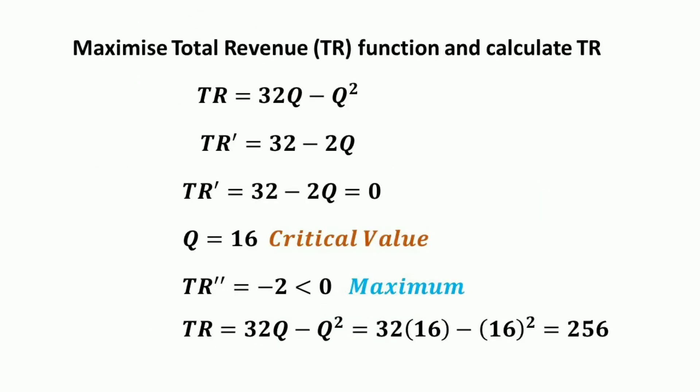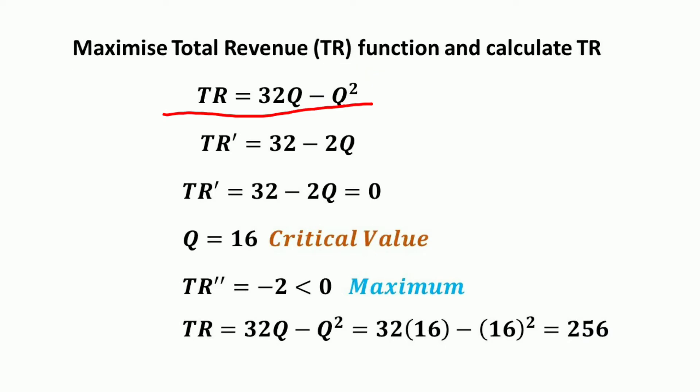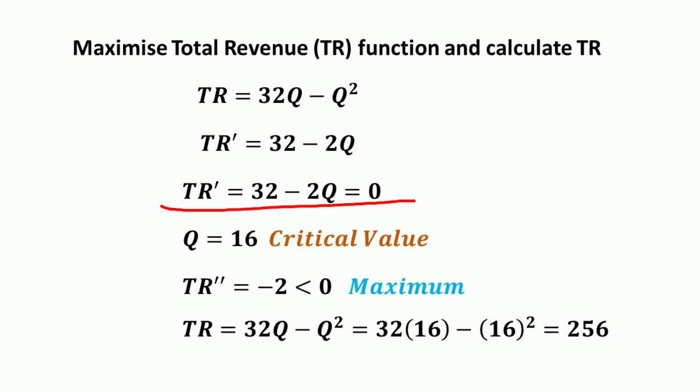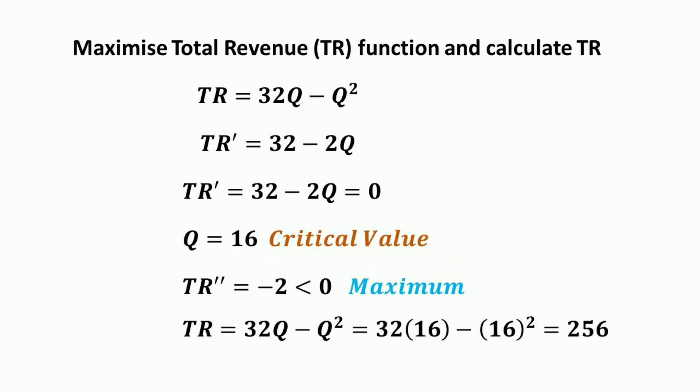Now for another question: we want to maximize the total revenue function TR = 32q - q², find the critical values, and calculate the maximum total revenue. Taking the first derivative: TR' = 32 - 2q = 0, which gives q = 16. Thus the critical value is q = 16. For the second order condition, the second derivative is -2, which is less than 0, confirming that the total revenue function is maximized.